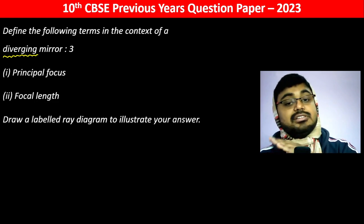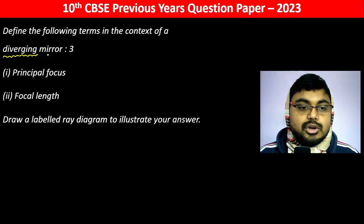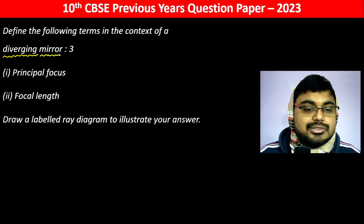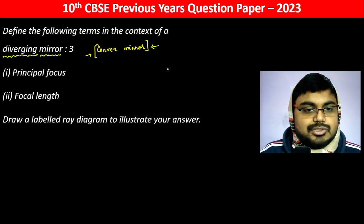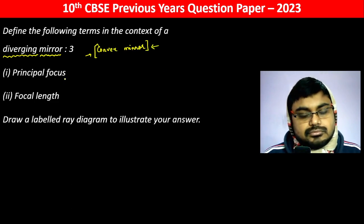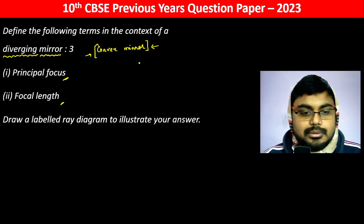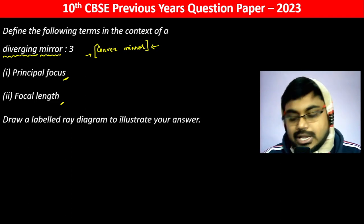A diverging mirror is convex. We have to tell principal focus, focal length, and draw a labeled ray diagram to illustrate your answer.